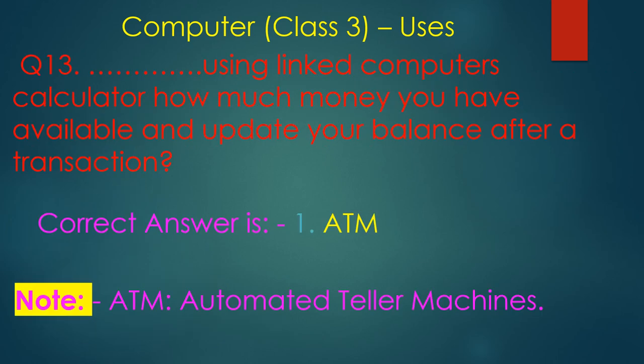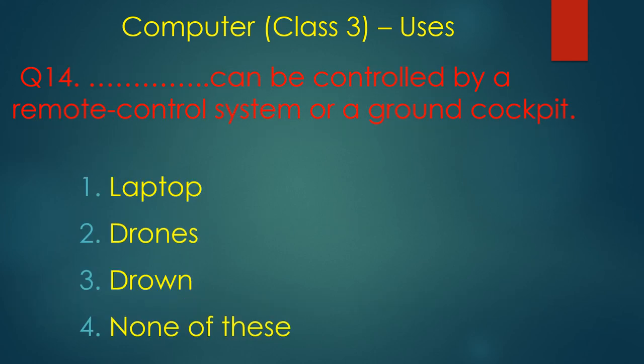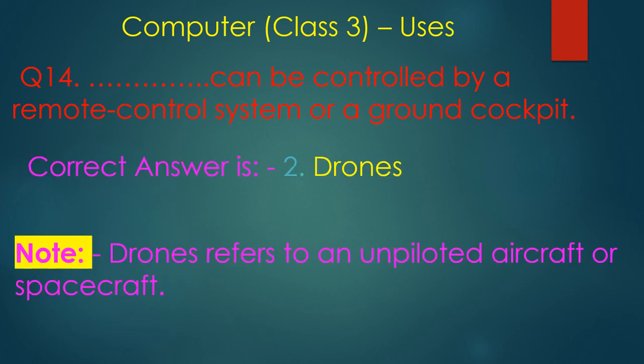ATM stands for Automatic Teller Machine. It is the machine that automatically calculates how much money you have available and updates your balance after a transaction. A drone is an unmanned aircraft or spacecraft that is controlled by remote control or a ground cockpit.